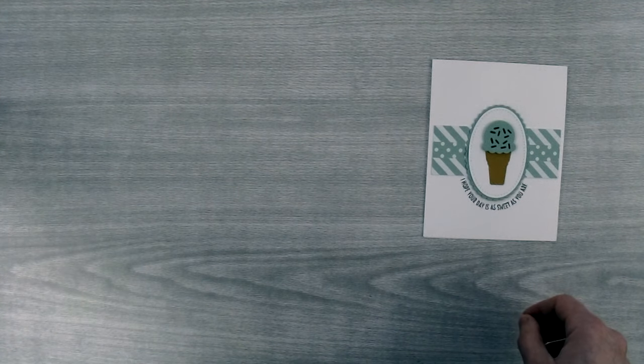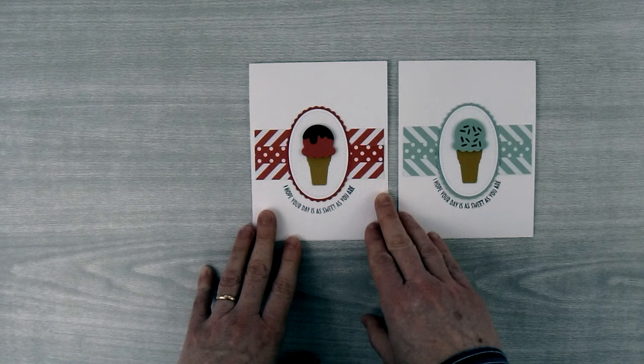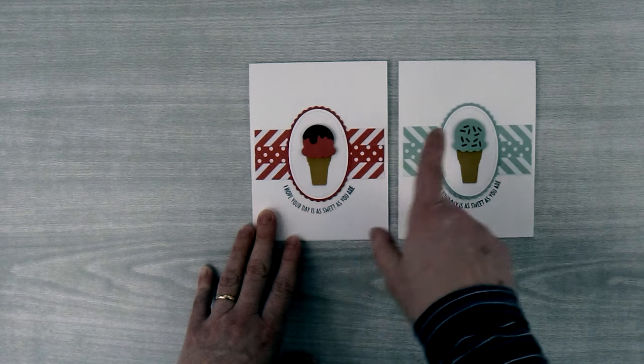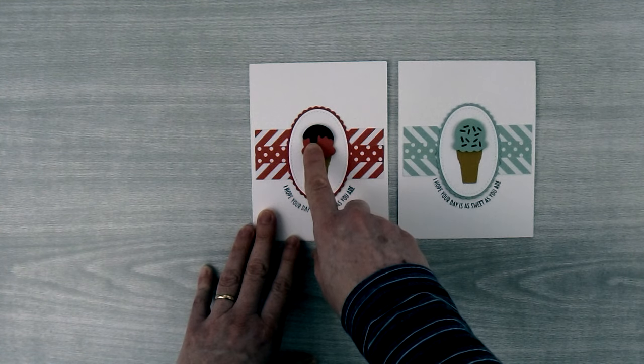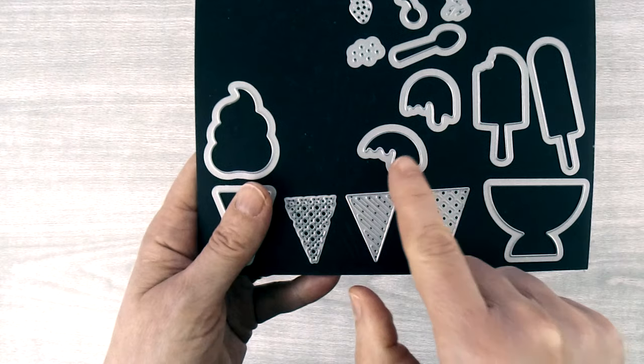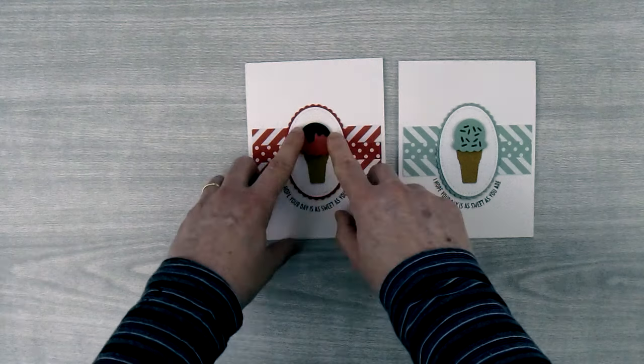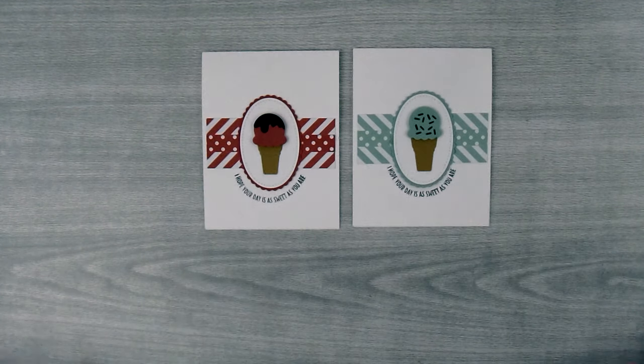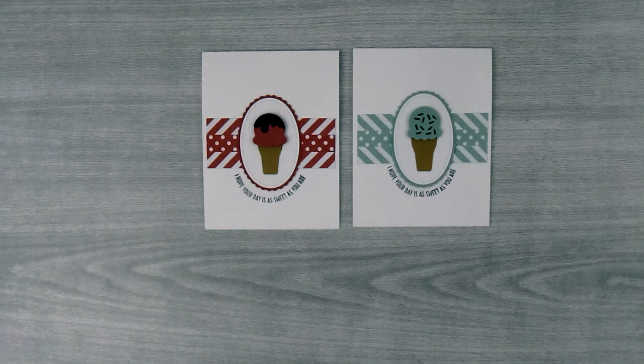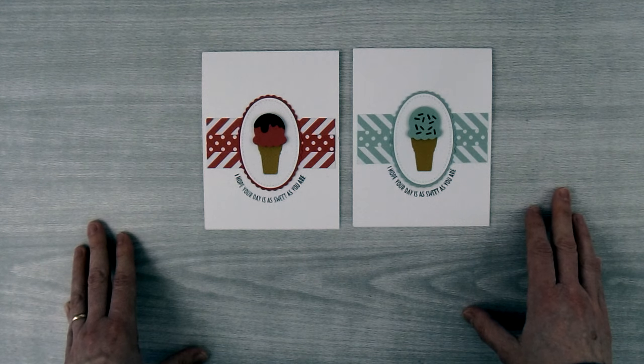Now for the other card it's basically the same thing except you're going to use Watermelon Wonder as your colors. Then instead of the sprinkles you're just going to die cut a piece of early espresso card stock with this little dip piece right here and then that will give you the layer that you need to add so that this one looks like a dipped cone. Don't you just love the way these cards turned out? And who doesn't love ice cream? So these cards could be made for many different occasions.